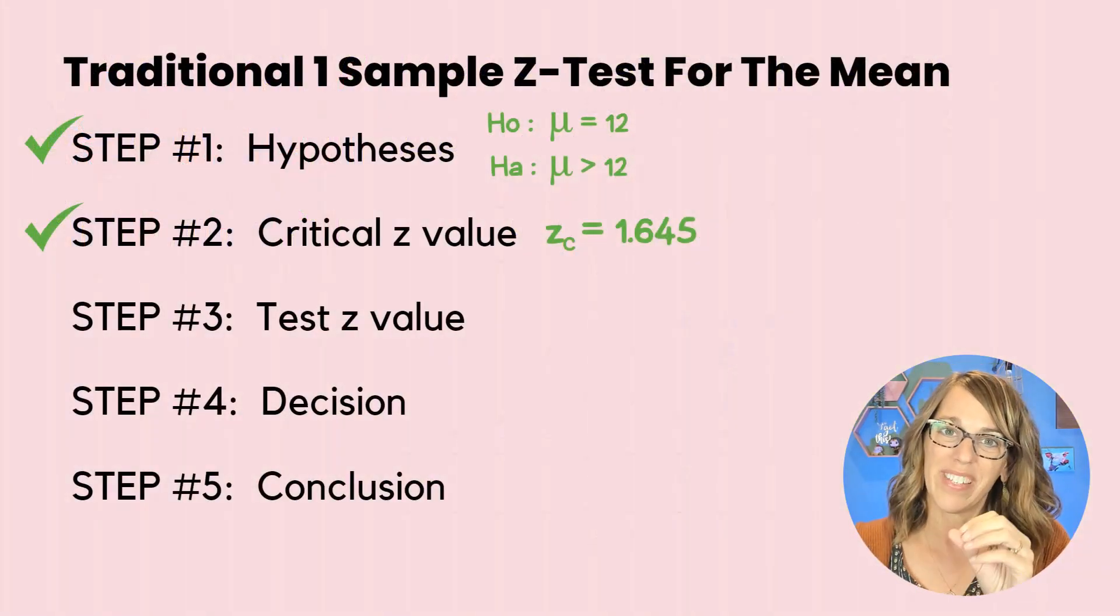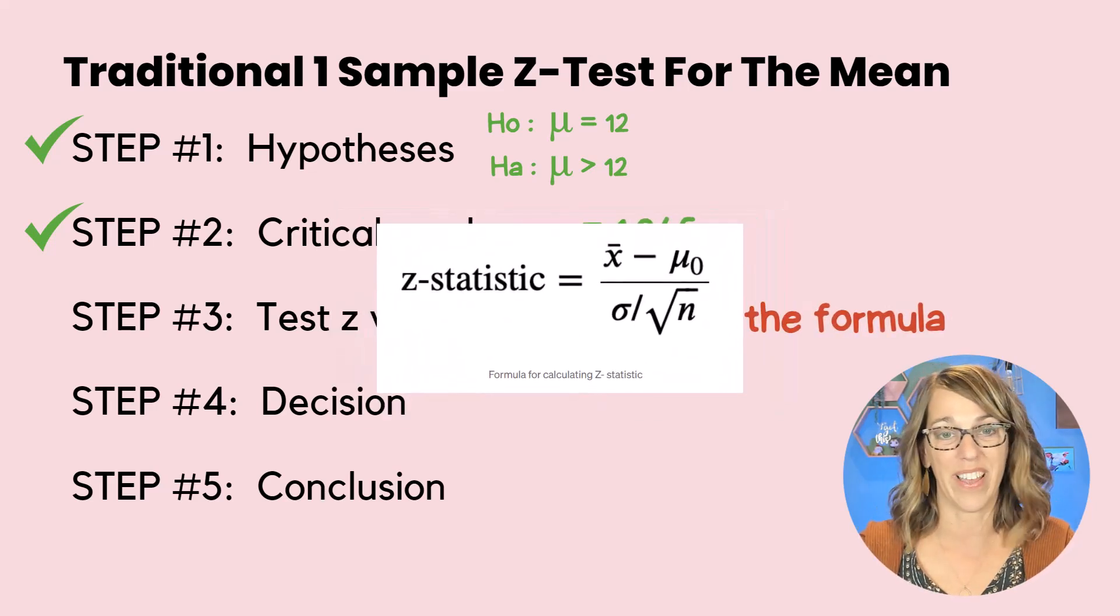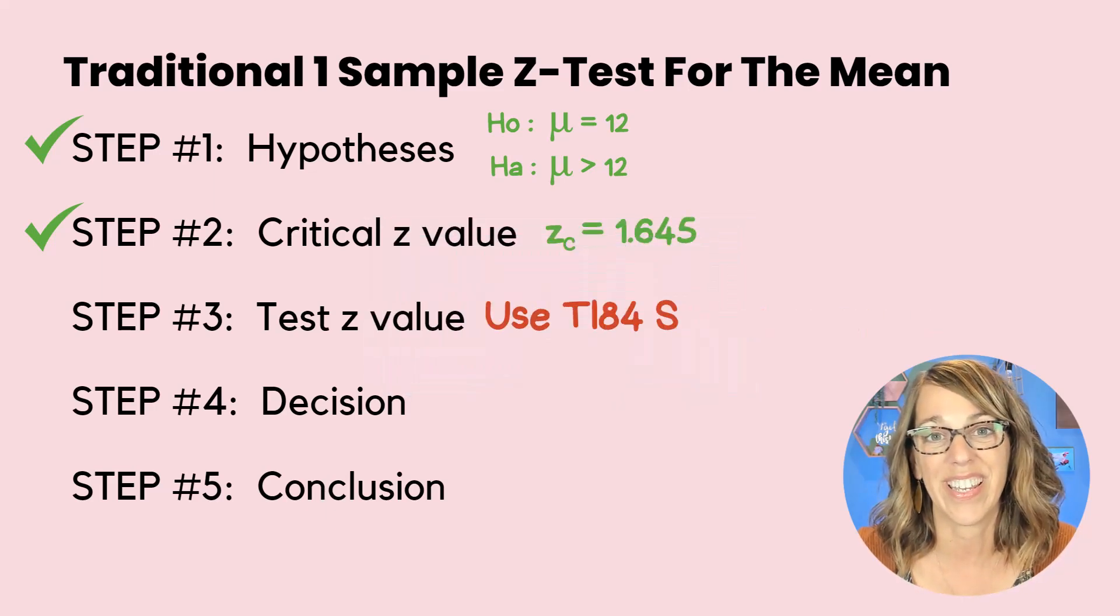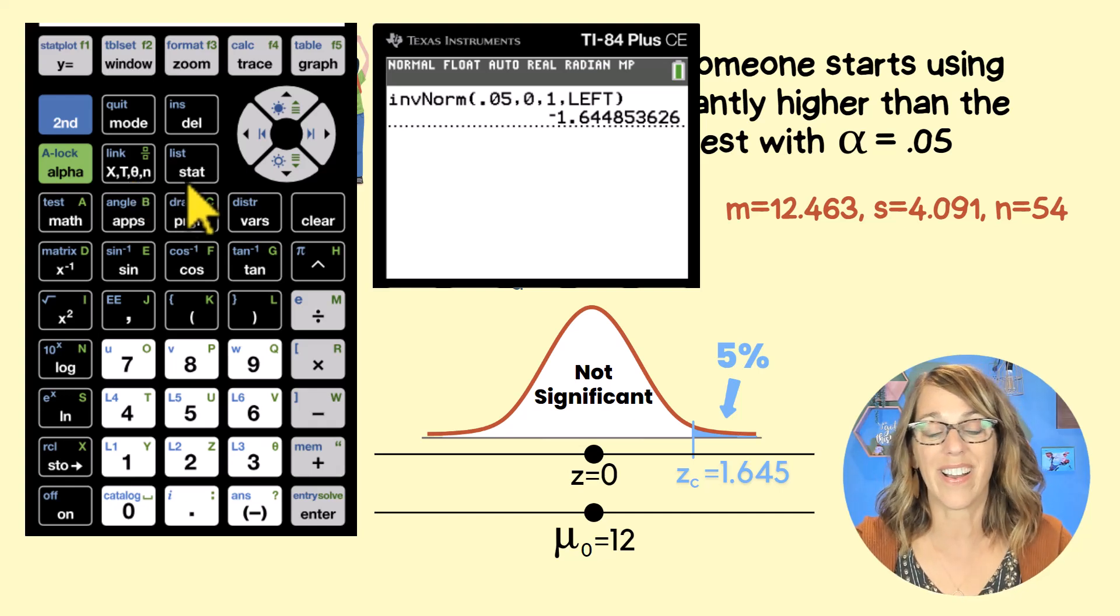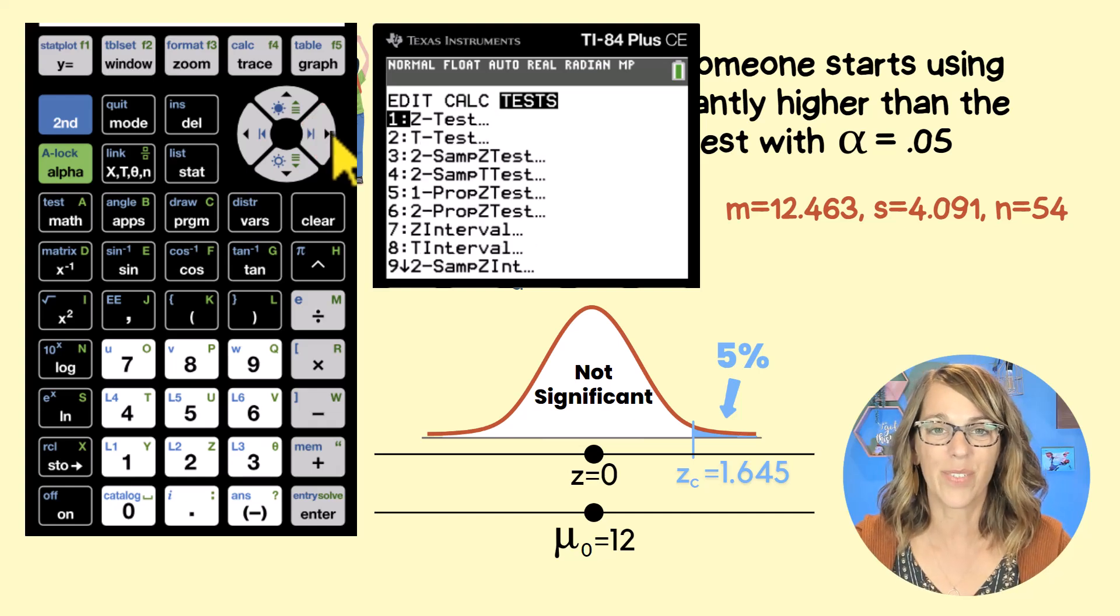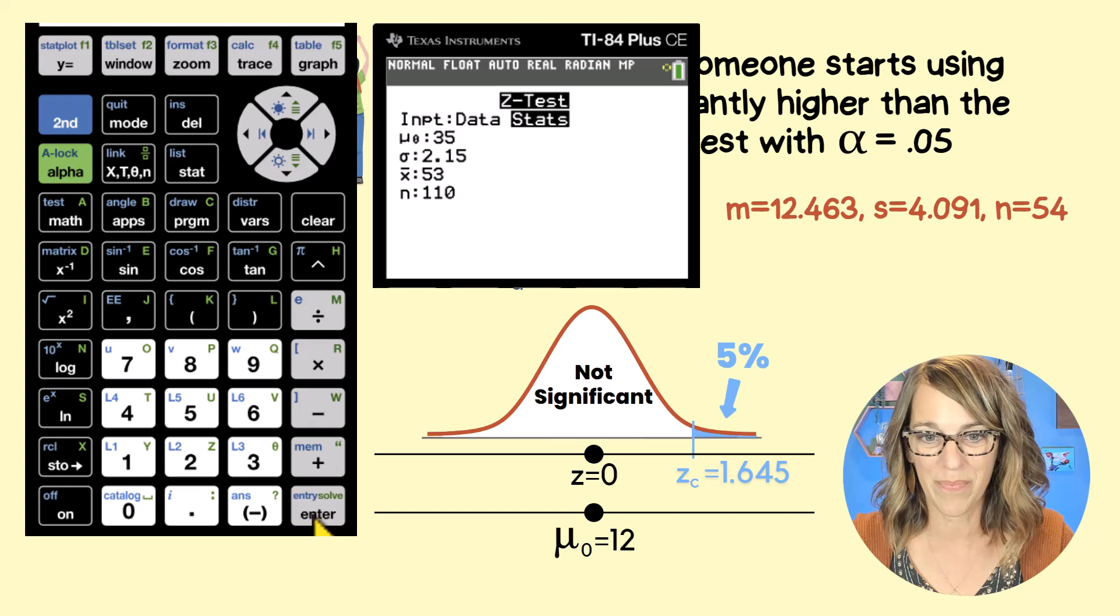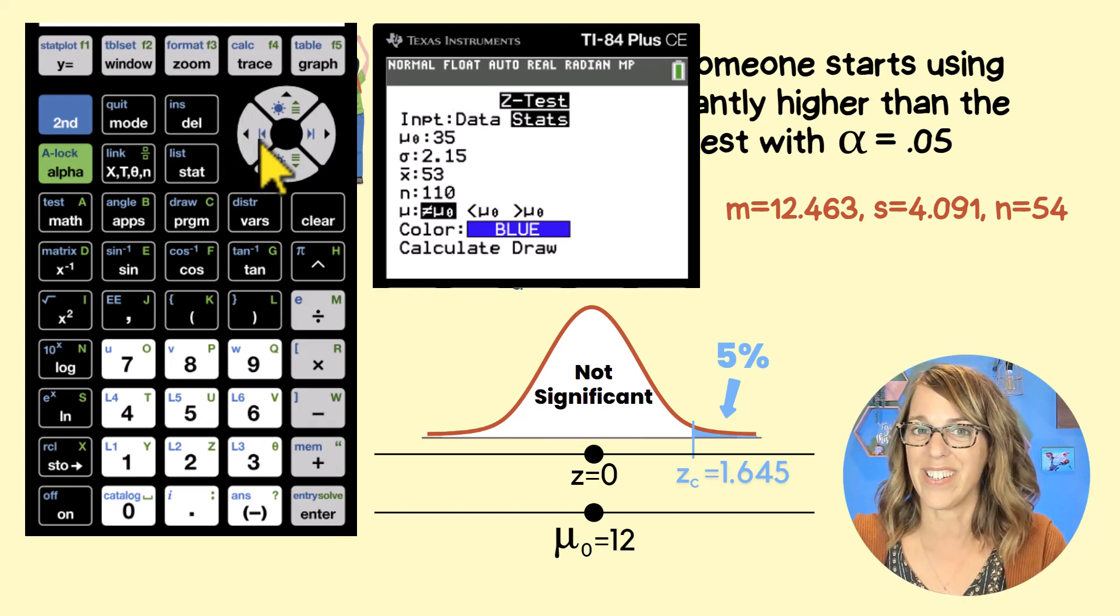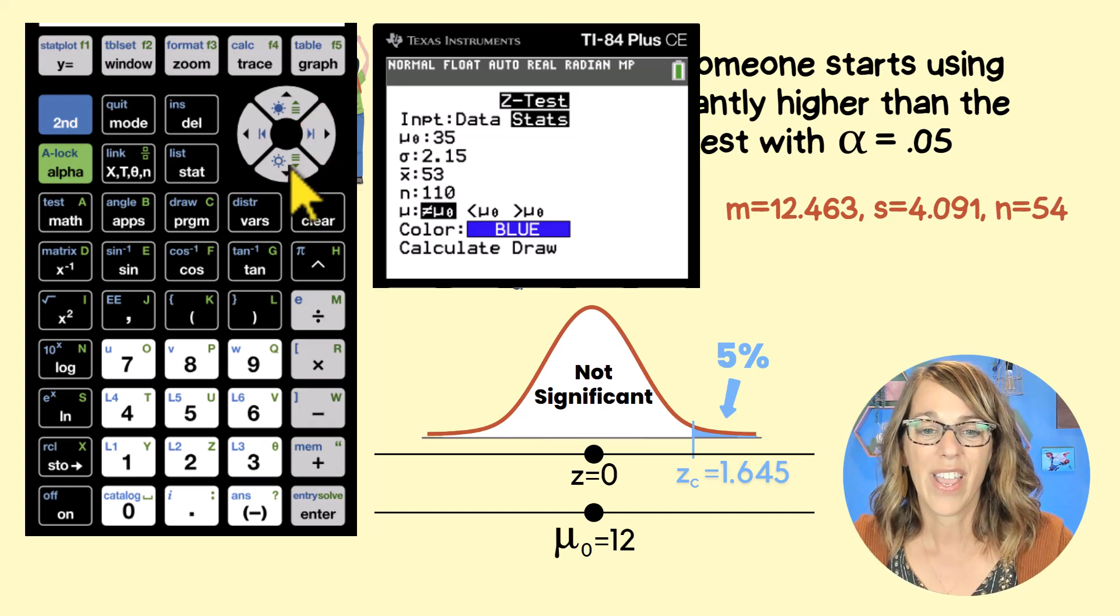Next, we want to compute that Z value for our sample mean. And we could certainly use this formula or we could go ahead and use the test feature in our 84. To get to the test menu, we're going to click on the stat key and then arrowing over to tests. We want that very first Z test. So we'll hit enter. And then I do want statistics. I'm not going to enter the data into the calculator. Instead, we're going to use the statistics that we found.